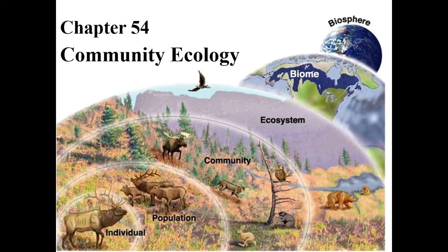Chapter 54, Community Ecology. So here's a community, and we're going to define the other levels of ecology so that you understand where the community fits. This is an individual organism, and if you have a bunch of those of the same species living in the same area, we call that a population. So it might be a population of elk. A community would be that population plus all of the other populations in the area.